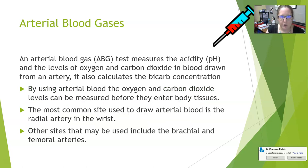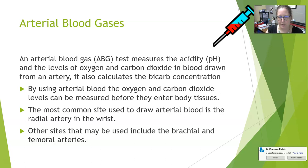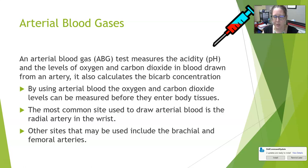Arterial blood gases (ABG) is a test that measures the acidity (pH) of the blood and the levels of oxygen and carbon dioxide gases in the blood drawn from an artery. It can also calculate the bicarbonate concentration based on all of these readings. By using arterial blood, oxygen and carbon dioxide levels can be measured before they enter the body tissue, so they are fresh from the lungs and haven't been delivered to the tissues yet.